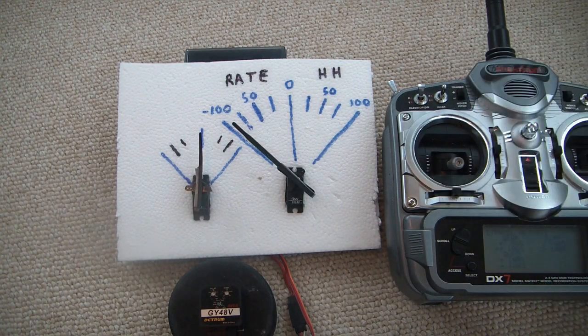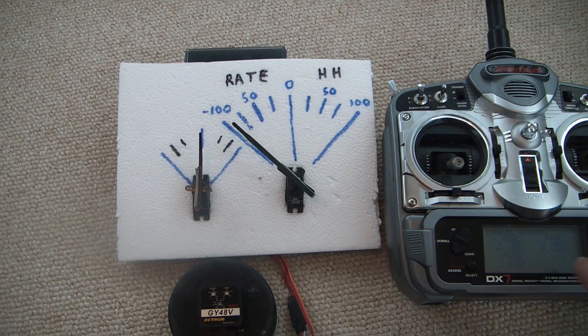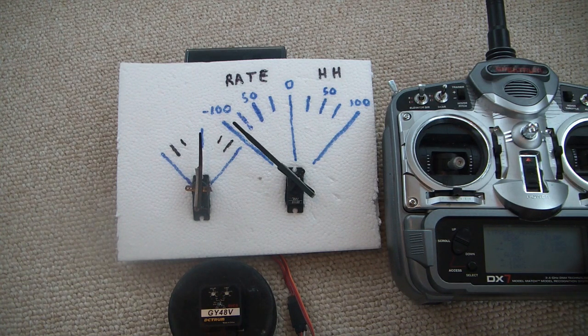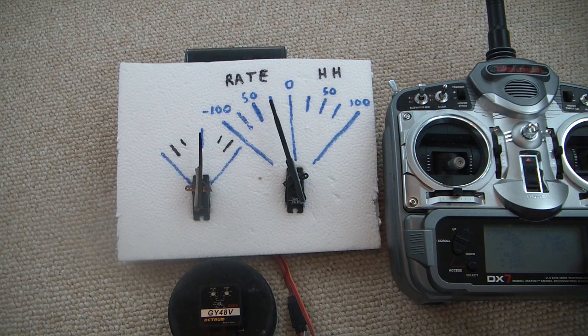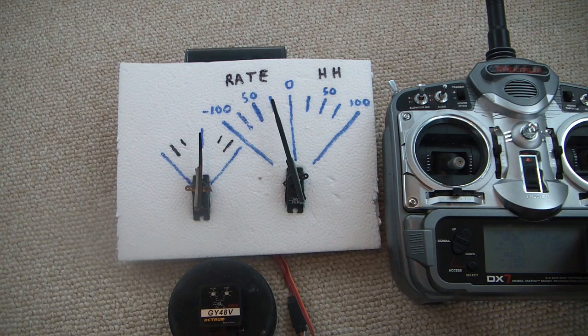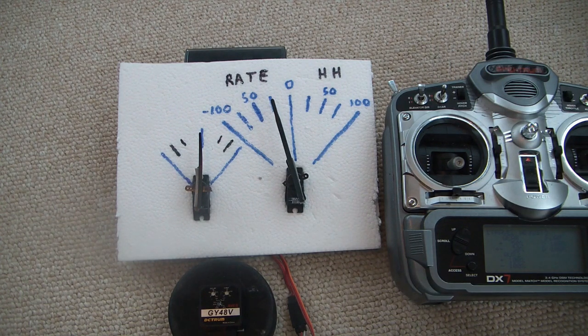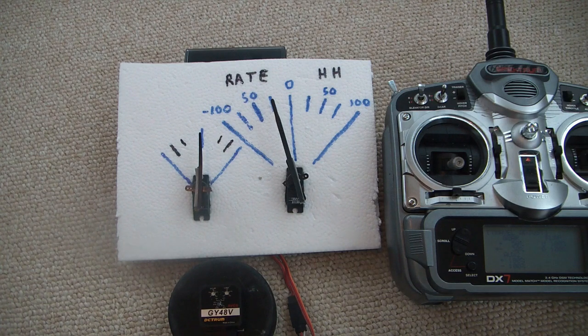So flip it over to rate, and right now the travel adjust shows 100%. If I lower that to around 30%, you can see which way the servo is moving. It's getting closer to center, and that's a lower for rate mode.